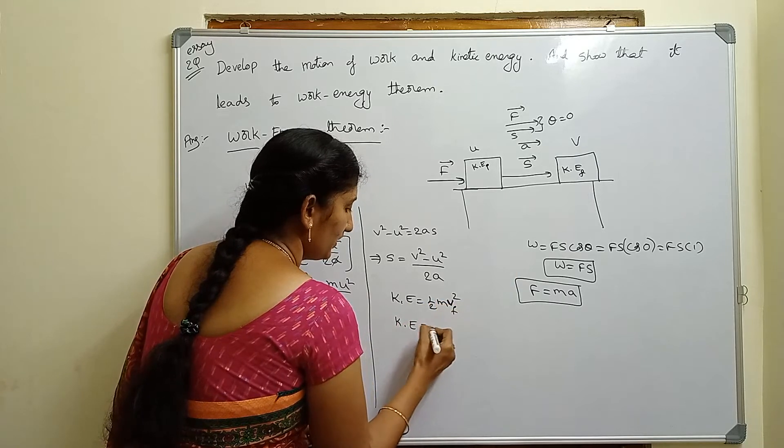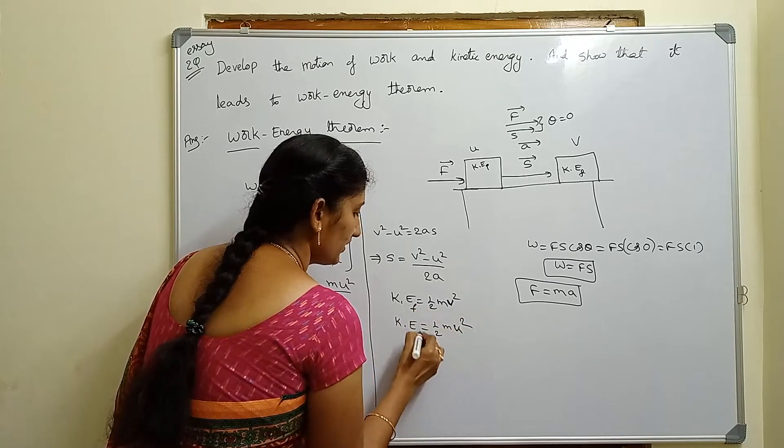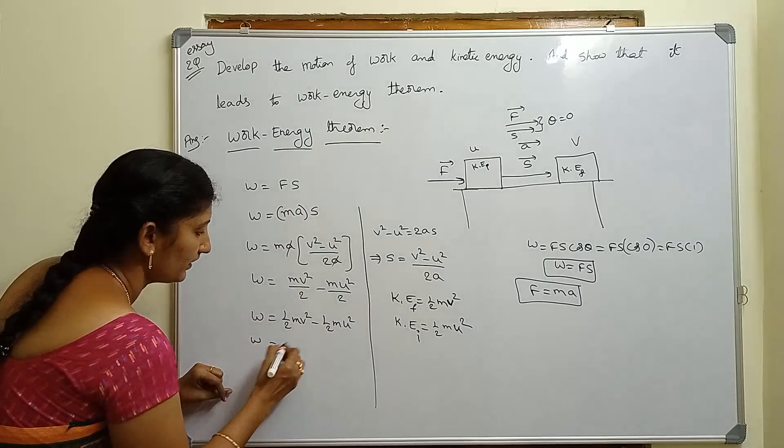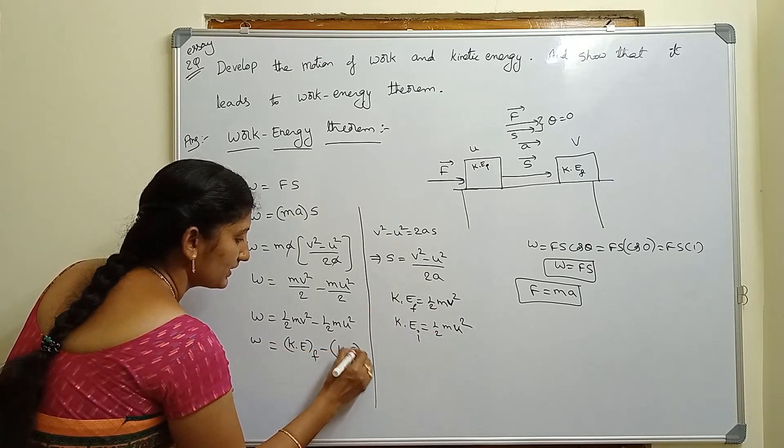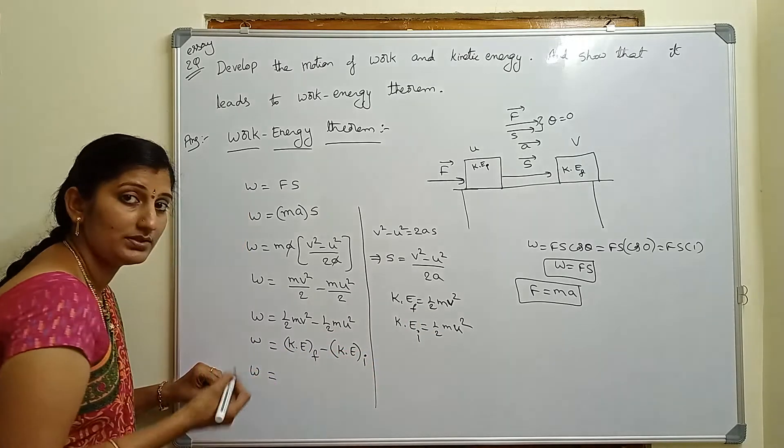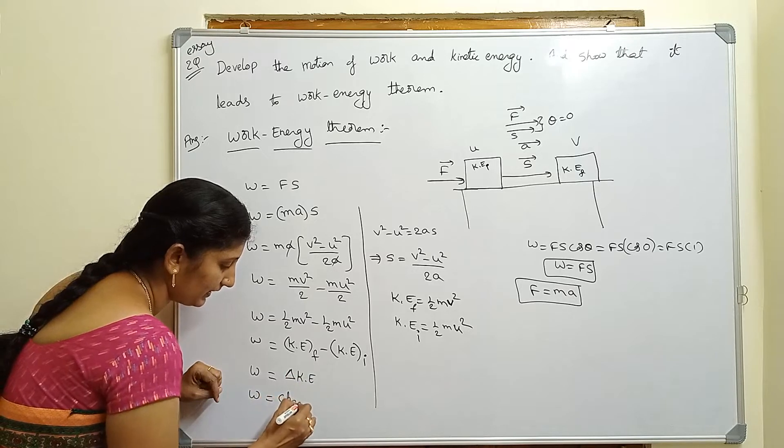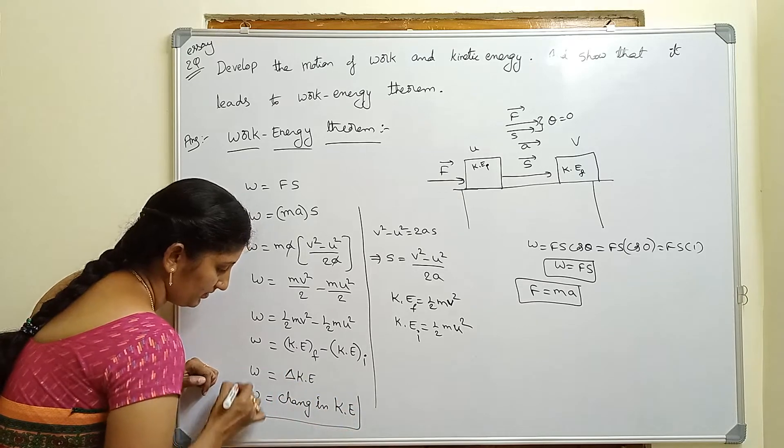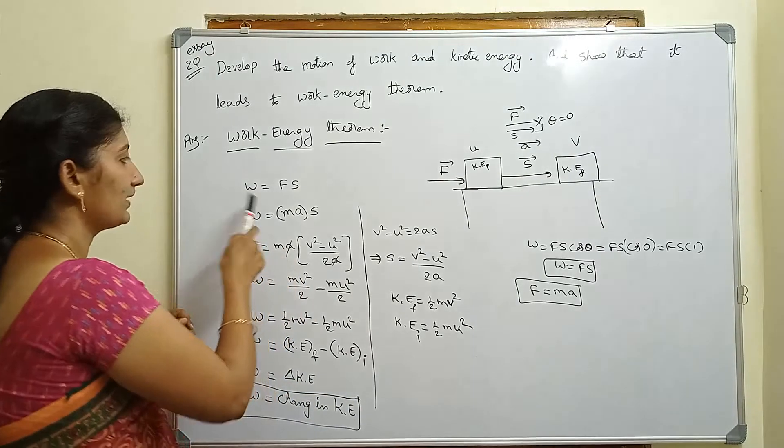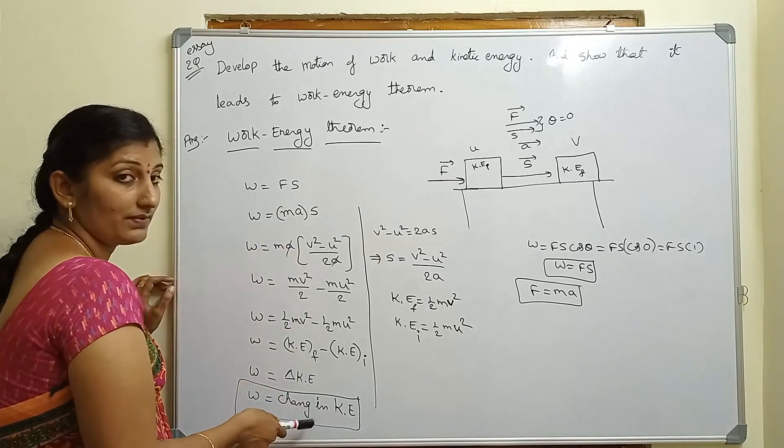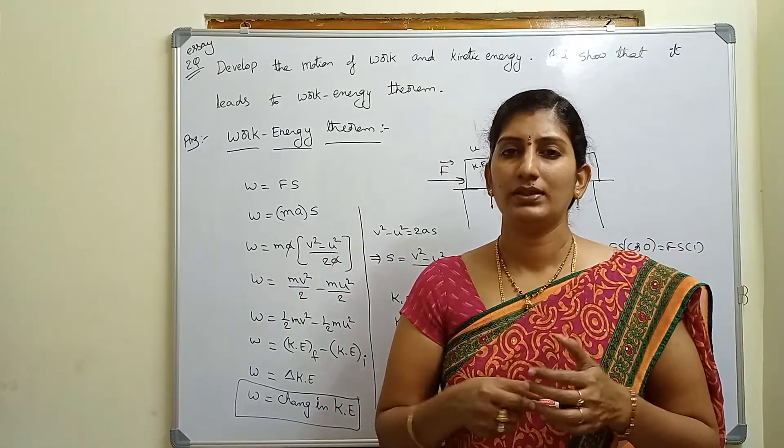V final is the final velocity, U is the initial velocity. So W equals half mV² - this is the final kinetic energy minus initial kinetic energy. Final minus initial is the change in kinetic energy, delta K, change in kinetic energy.